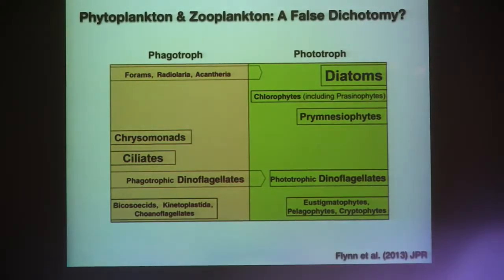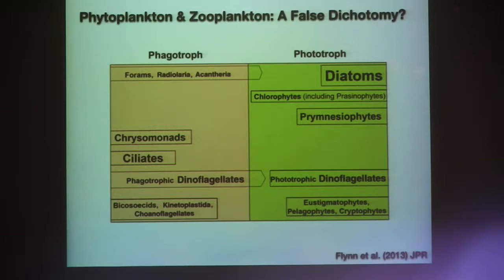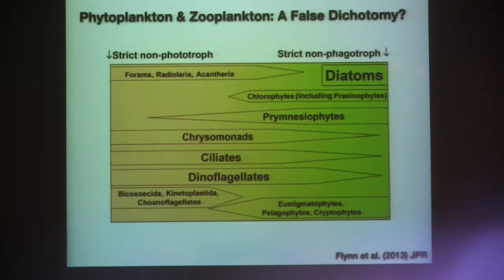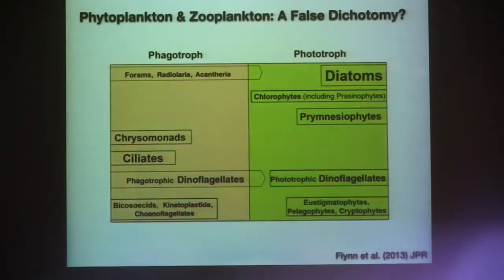Going back to that false dichotomy, this is a paper from Kevin Flynn showing how we put organisms in the marine food web into boxes by functional group or by species or taxonomic group. Those groups are then clumped into bigger boxes of phagotrophs on the left and phototrophs on the right. They argue quite convincingly that this is not really what the ecosystem looks like — it's more like a spectrum between autotrophy and heterotrophy, and everything occupies all points along that spectrum except maybe diatoms, which have not been shown to show any form of mixotrophy yet.